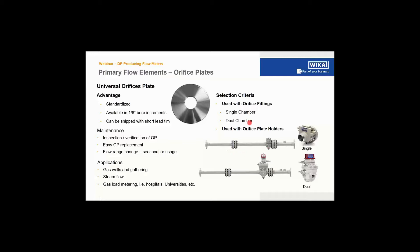Dual chamber orifice fittings allow you to remove the orifice plate from the flow stream without shutting down the flow. This fitting has a chamber which is pressurized and a valve separating the two chambers. You can move the orifice plate from the flow chamber into an upper chamber, seal it off, remove the plate, do your inspection, change it for a new one or change the flow range, and reinsert it into the flow stream — with only a short time where no plate is in the line.